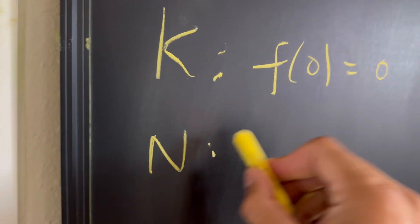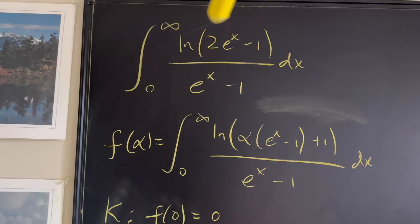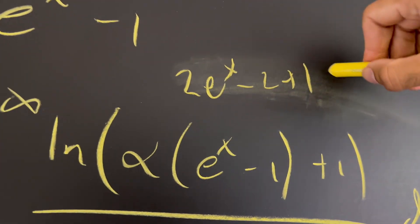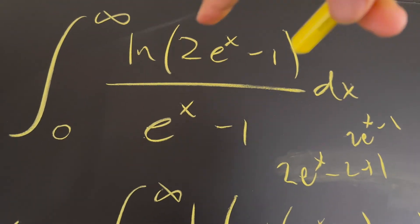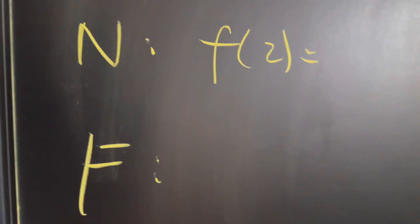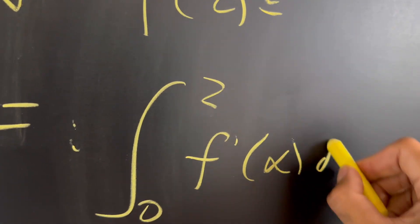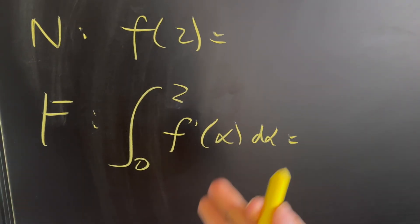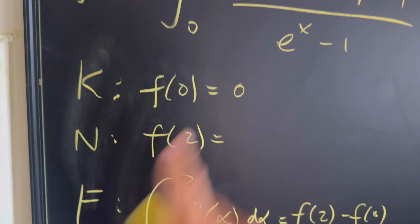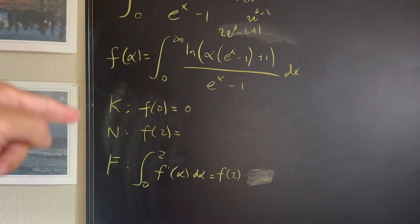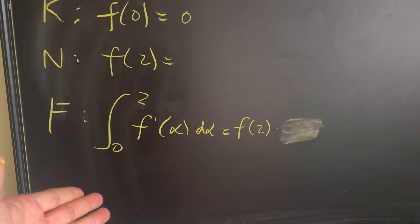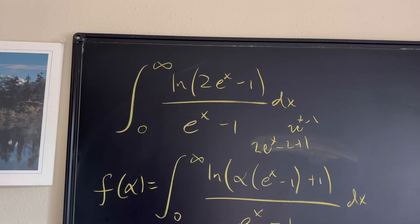What do we need? We need f(2). If alpha equals two, we get two times e^x minus one, which gives us 2e^x minus one — exactly what we need in the original integral. So f(2) is the integral we actually need. According to the first fundamental theorem of calculus, the integral from zero to two of f'(α) dα equals f(2) minus f(0), and since f(0) = 0, this is just f(2).